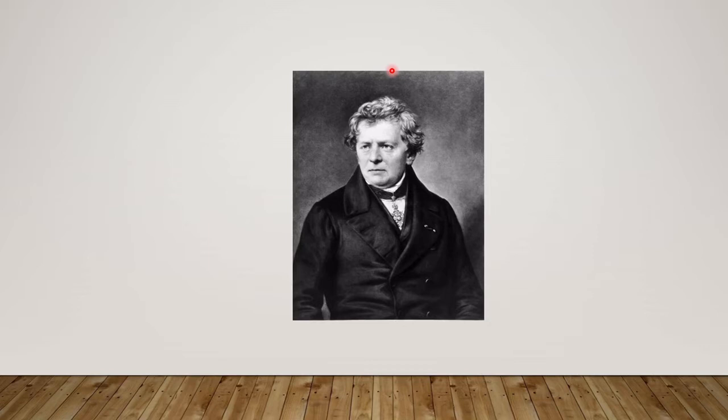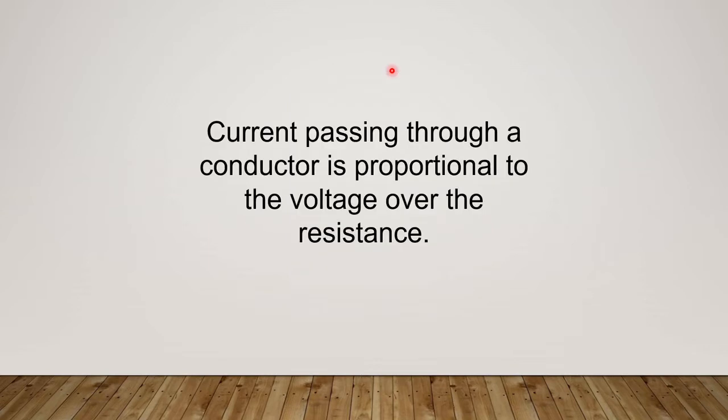And so this German physicist and mathematician figured out that current, voltage, and resistance actually had an interesting relationship. And he described the relationship as this: Current passing through a conductor is proportional to voltage over the resistance.